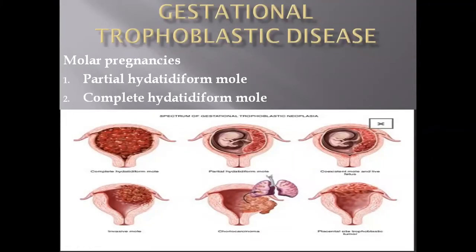Welcome to this video where we will discuss complete hydatidiform mole, making contrast points versus partial hydatidiform mole. In this first picture representing the complete hydatidiform mole, we can see that all the endometrium of the uterus is filled with edematous villi, and there is no normal component of fetal tissue. In complete hydatidiform mole, there is no fetal tissue.